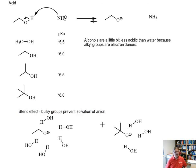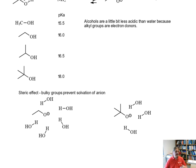So you can't get as many water molecules close to the anion to help stabilize it. So what's really going on here is that bulky groups prevent solvation of anions. And so that's why tert-butyl alcohol has a higher pKa than ethanol and methanol, not because tert-butyl is a better electron donor, but because tert-butyl is just bigger.